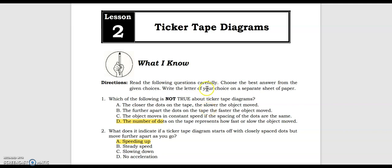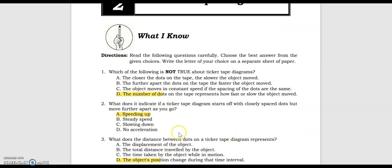Let's start with the 'What I Know' portion of this topic: ticker tape diagrams. Number 1, which of the following is not true about ticker tape diagrams? The answer is: the number of dots on the tape represents how fast or slow the object moved. Number 2, what does it indicate if a ticker tape diagram starts off with closely spaced dots but moves farther apart as you go? Speeding up.